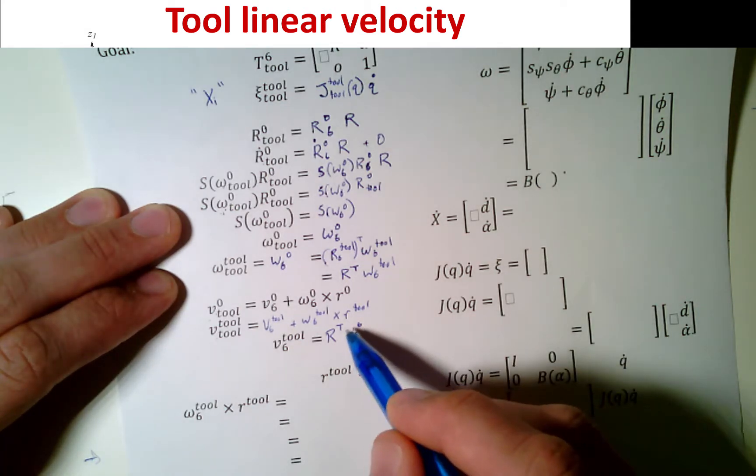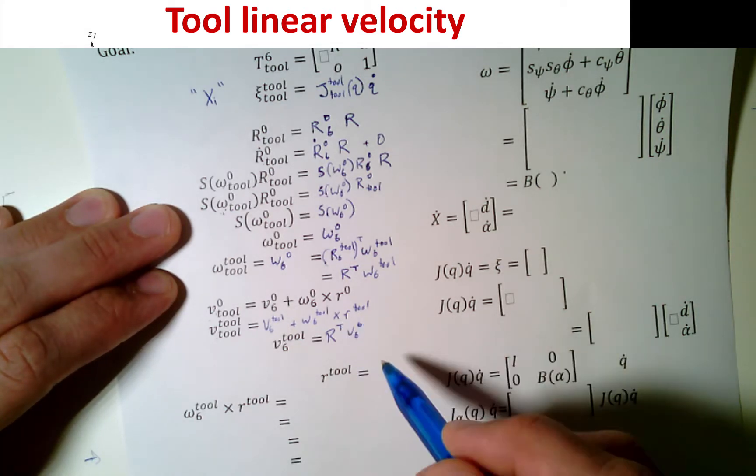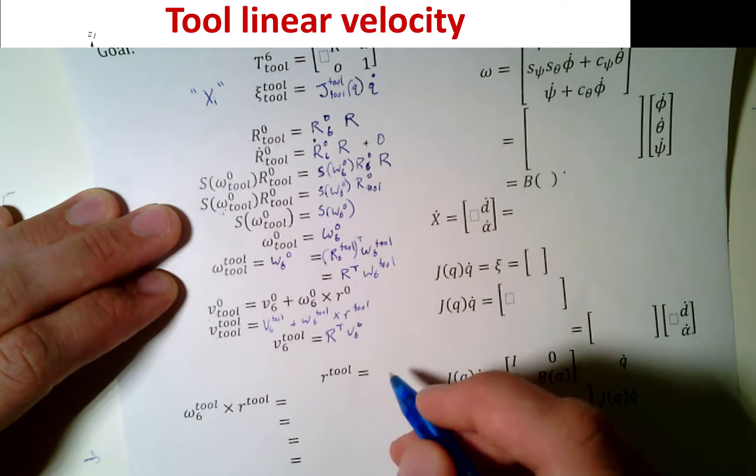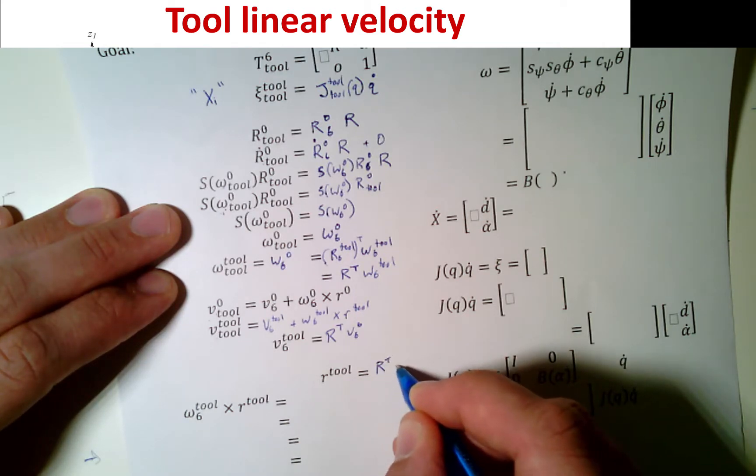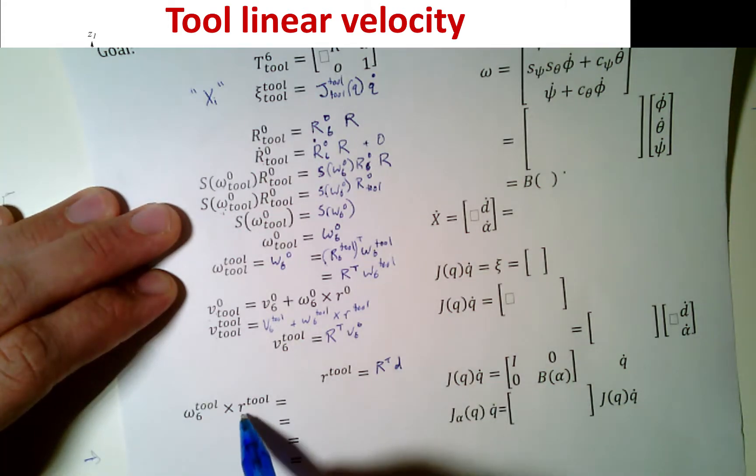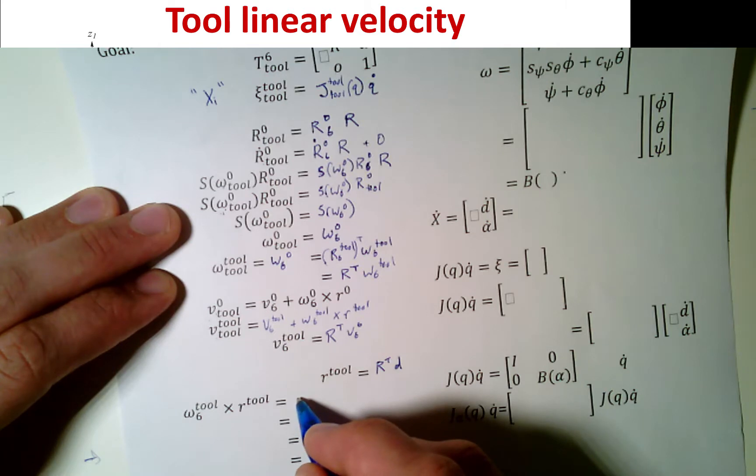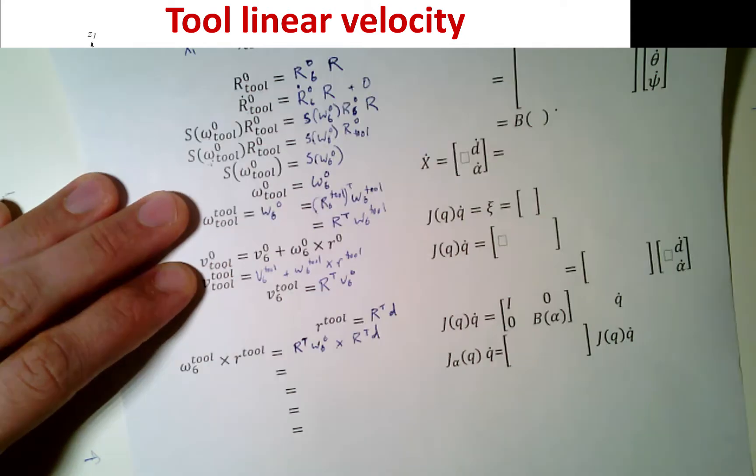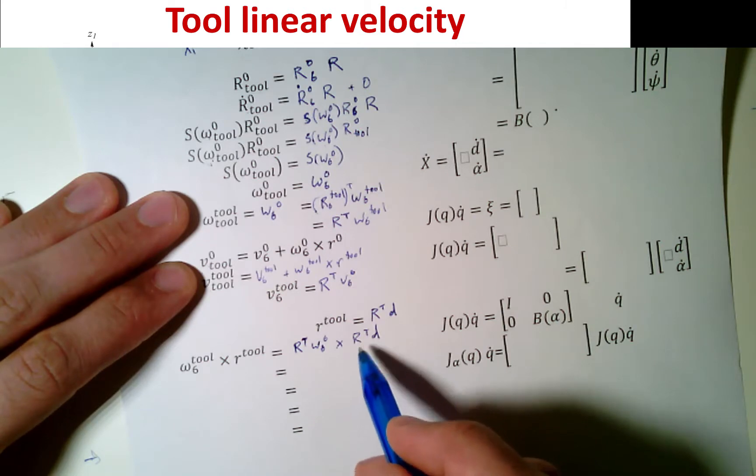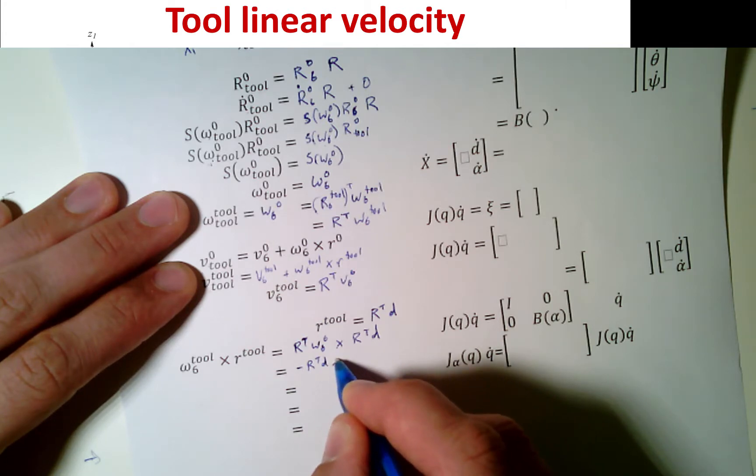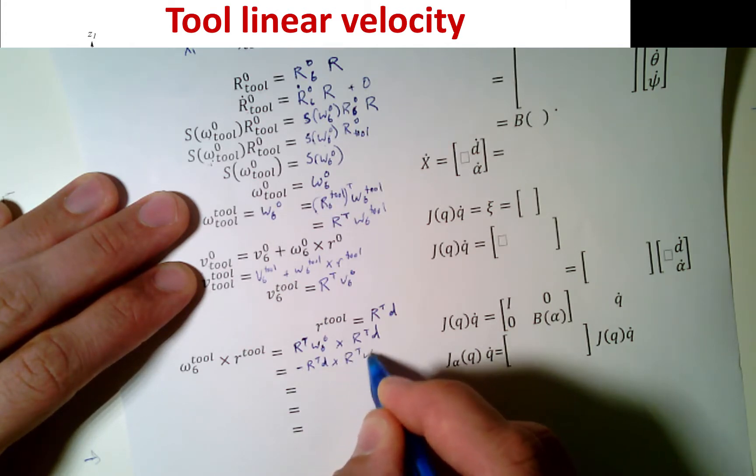The tool in frame 0 is going to be our V6, our original velocity, plus your angular velocity around that rotation that our end effector is doing, plus this R vector, which is going to be the distance. The tool in the tool frame is just going to be V6 in the tool frame, plus omega 6 in the tool frame, cross R in the tool frame. All we're doing is we're changing the frame that these are in. It's a free vector, we're allowed to do that. This means that V6 in the tool frame is equal to just our rotation matrix, RT, V6 in frame 6.